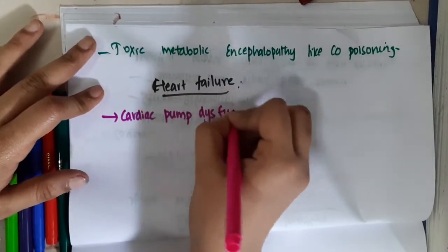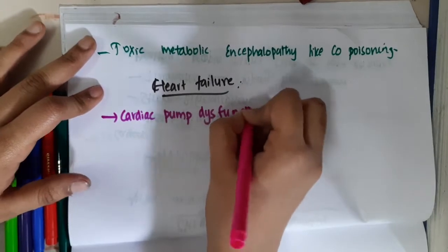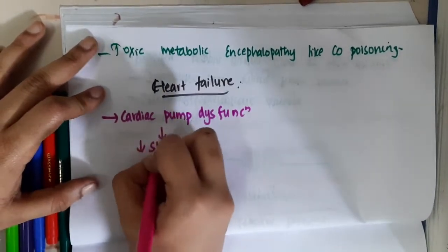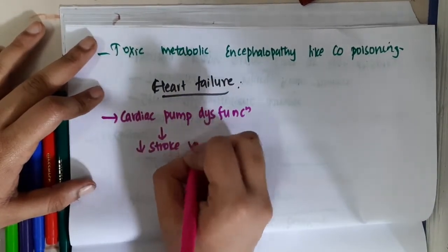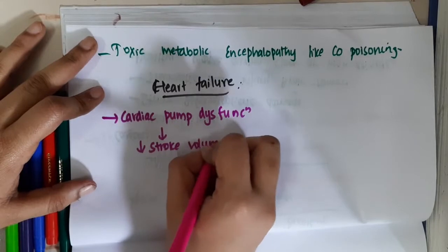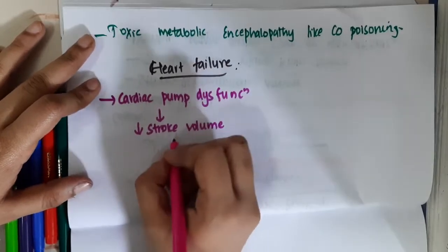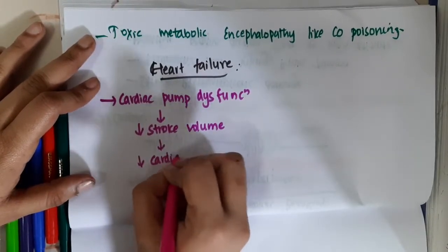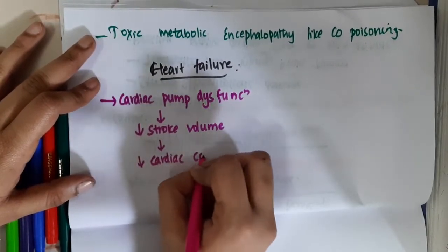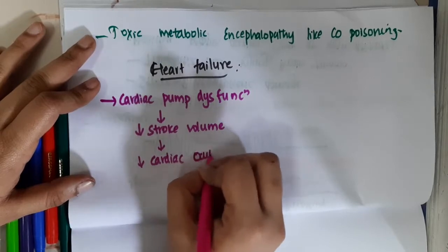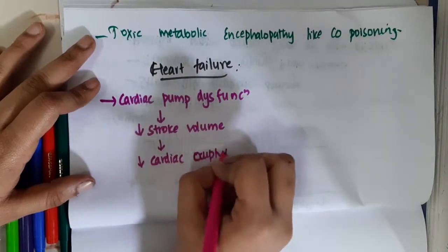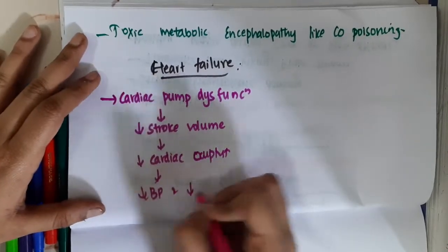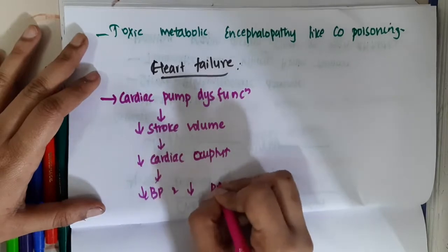Because of this cardiac pump dysfunction, this will result in decrease in stroke volume, which will result in decrease in cardiac output. Because of decreased cardiac output, there is decreased blood pressure and decreased perfusion.